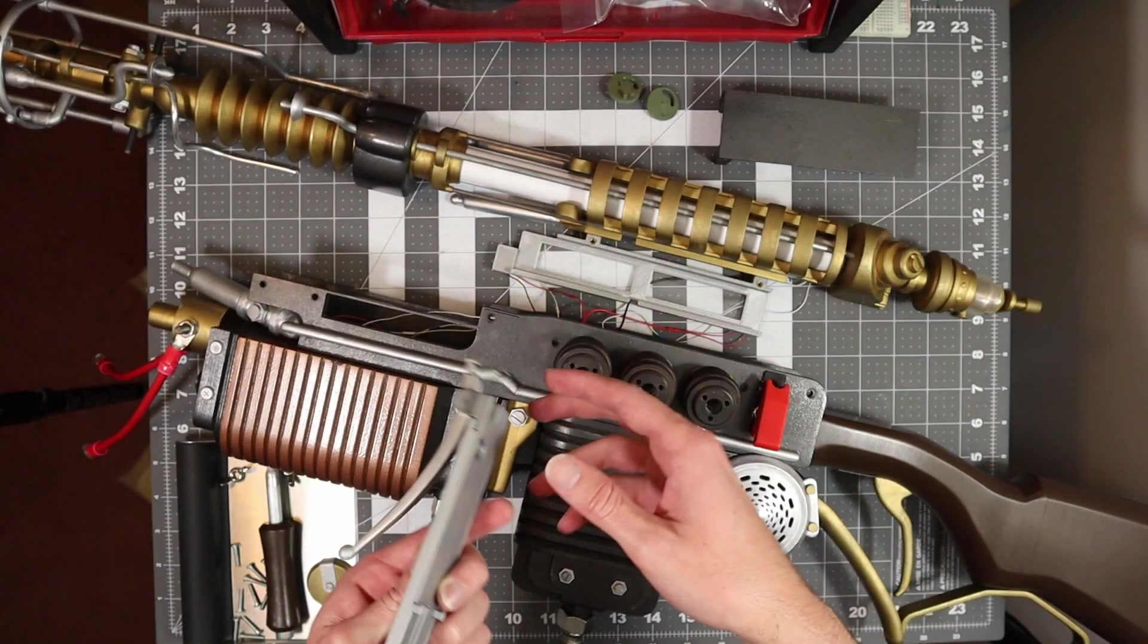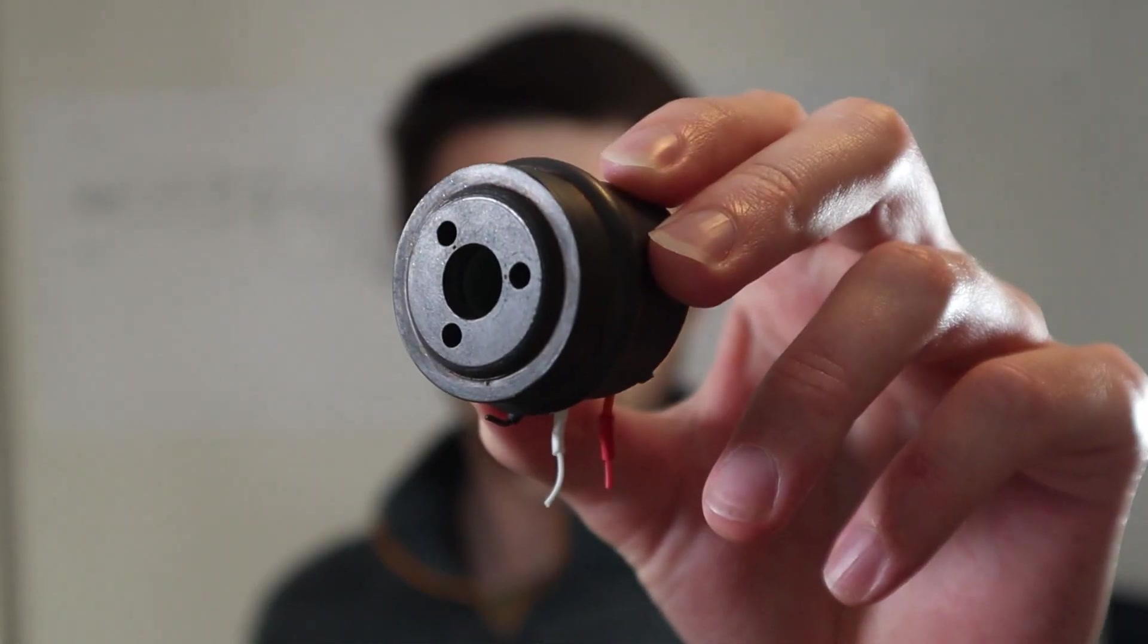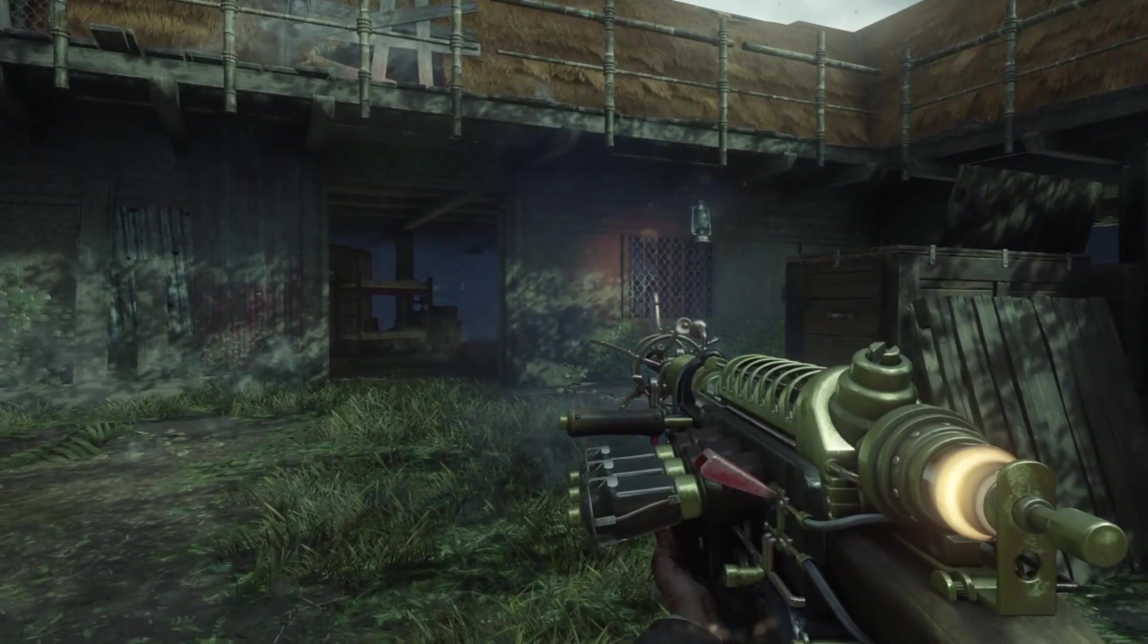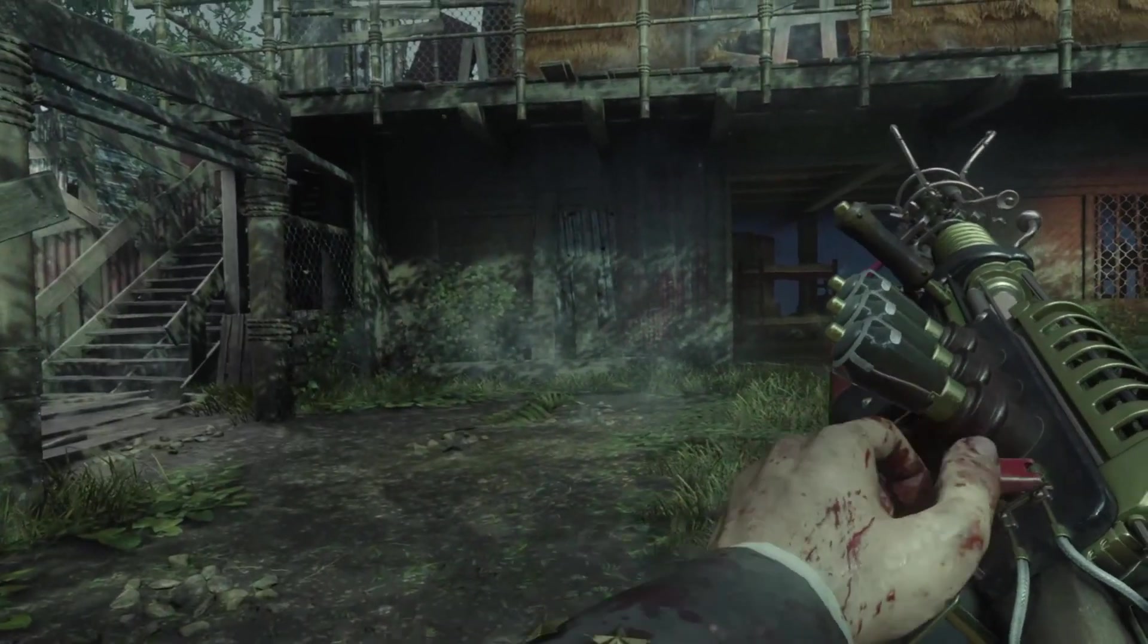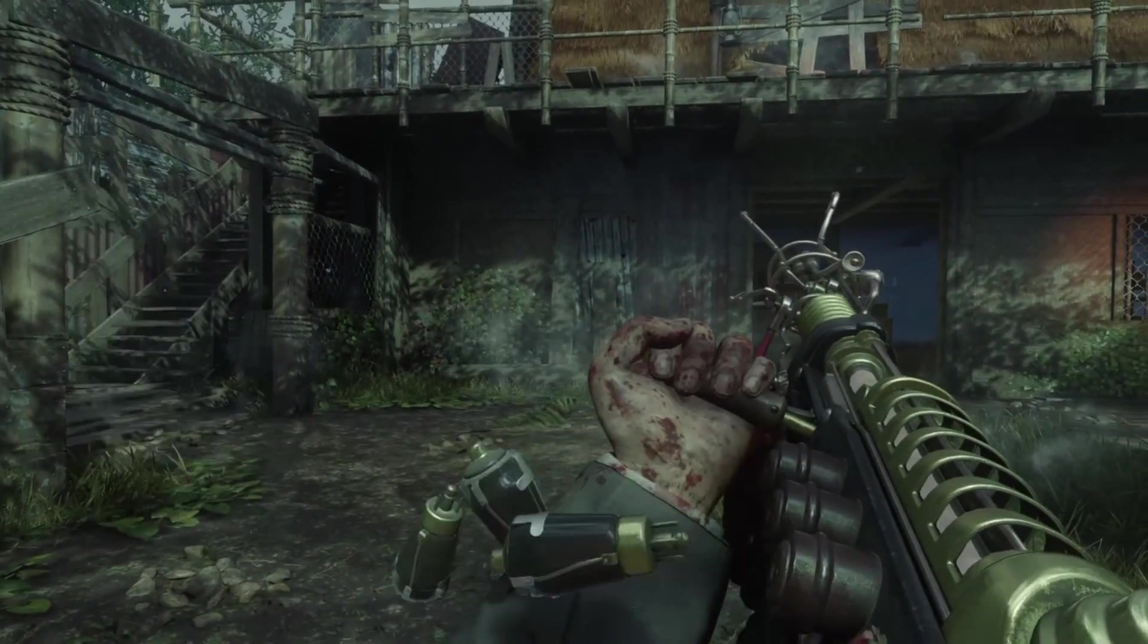The two main components that drive the ejection and reloading are the slider and the ejector. To understand these parts and how they work, we have to go back to the source. How does it work in the game? After turning off the red switch, our character pulls the lever, and each vacuum tube pops out one at a time in series.